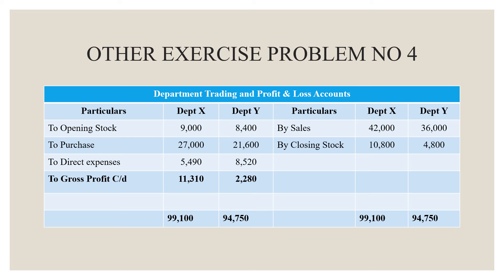We will prepare the trading account format. On the credit side, we have Sales and Closing Stock. Sales are 42,000 for Department X and 36,000 for Department Y. Closing Stock is 10,800 for Department X and 4,800 for Department Y.